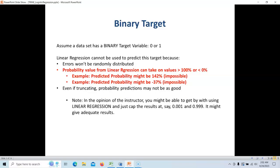Now, in the opinion of your instructor, and actually widely used in the field of data science, a lot of people use linear regression anyway. Even though you really shouldn't, a lot of people do, and they will just truncate up to like 1.001 or 0.999, and it gives actually adequate results. It's linear regression is pretty robust.